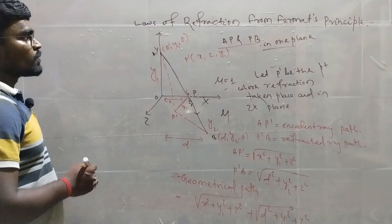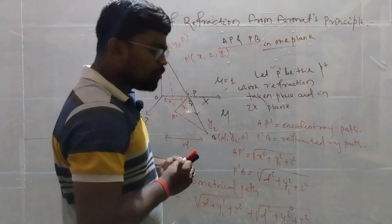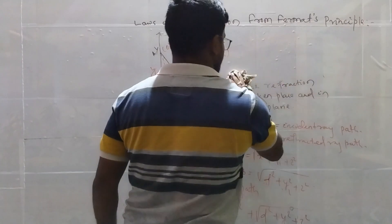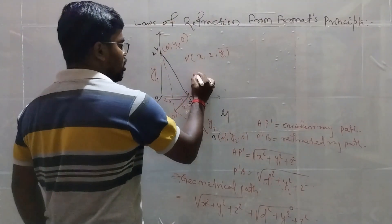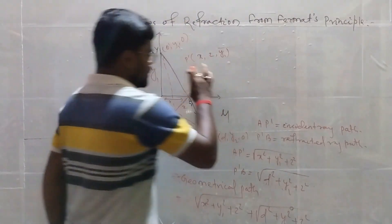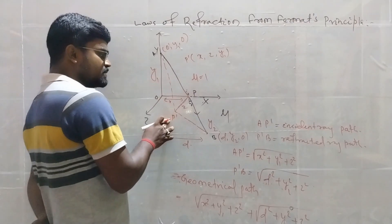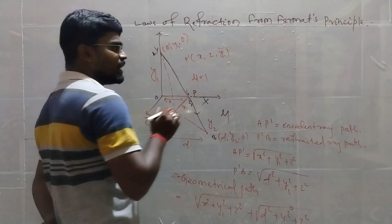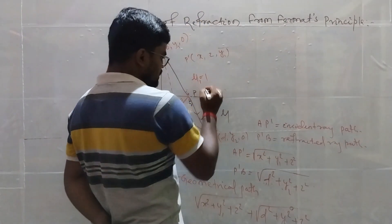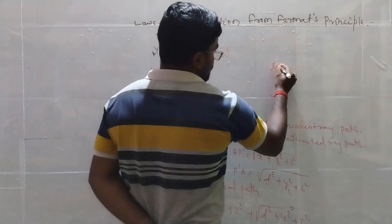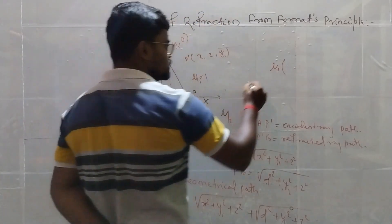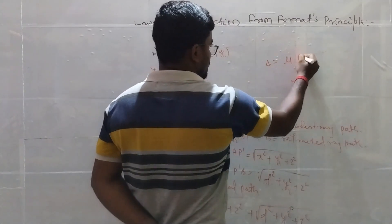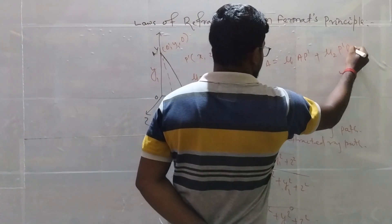This is the geometrical path. Now I have to find out the optical path. The optical path: the ray starting from A reached point P' — it travelled in medium with refractive index mu1. After point P', it refracted into the glass medium having refractive index mu2. The optical path is the product of refractive index and geometrical path. So optical path delta equals mu1 times A P' plus mu2 times P' B.